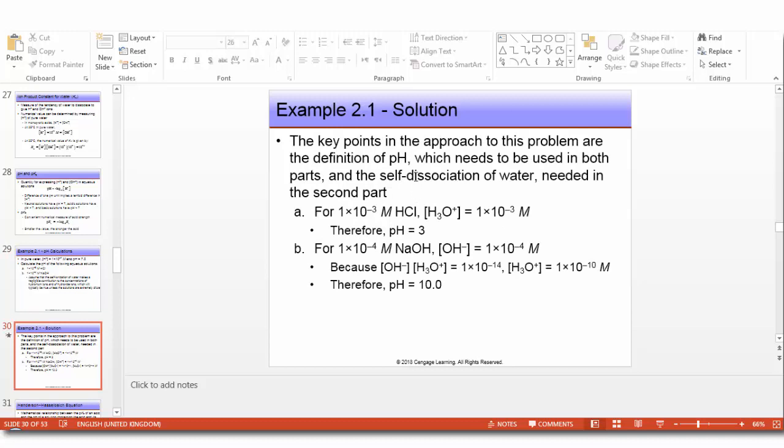The key points in the approach to this problem are the definition of pH, which needs to be used in both parts, and the self-dissociation of water needed in the second part. For 1 times 10 to the minus 3 M HCl, the concentration of H+ equals 1 times 10 to the minus 3 M because HCl is a strong acid and dissociates completely. Therefore, pH equals 3.